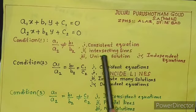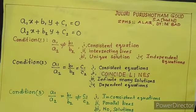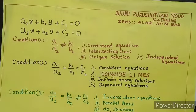And intersecting lines, if the graphical representation, we get the lines are intersecting lines. So we get only unique solution, only one answer and independent equations. Already we learned conditions.